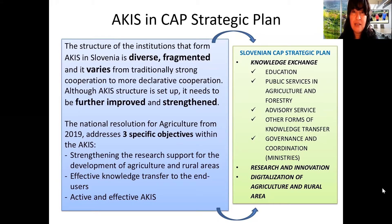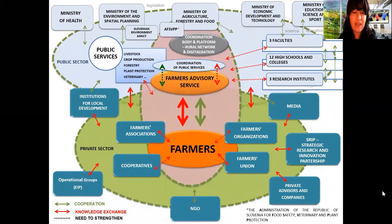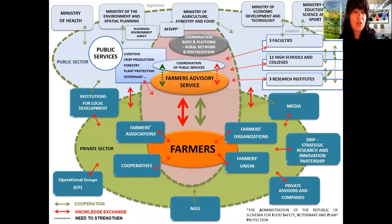We talk about three pillars: knowledge exchange, research and innovation, and digitalization. The Slovenian ECIS scheme covers all stakeholders and defines the processes of their cooperation and knowledge exchange. We use circles and arrows to define cooperation and knowledge exchange, and the dashed lines mean that we need to strengthen either cooperation or knowledge exchange — cooperation in green and knowledge exchange in red.